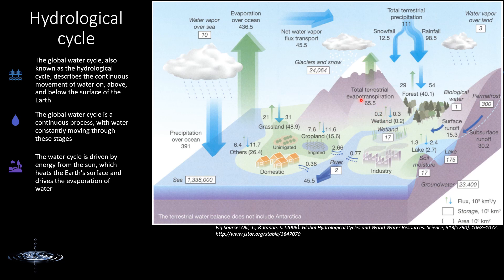This shows that almost half of the water is recycled within the land mass. At any given time, the water volume in the ocean is 1.34 trillion km³. Water vapor over sea is 10,000 km³, water vapor over land is 3,000 km³, and the quantities in lakes, soil moisture, and groundwater represent storage at any given time.